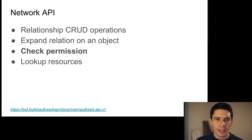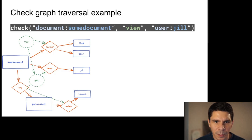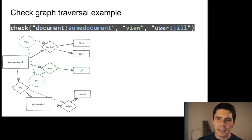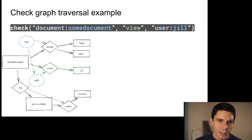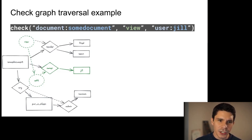Here's a quick example of how we traverse the graph. We're checking if user Jill has the view permission on a document. We start at 'view' and walk downstream. First we check 'reader' — Jill is not a reader. Then we walk down to 'edit' and from edit we go to 'owner' — we find that Jill is an owner. At that point we can already determine she has view on this document. We also check the admin path to see if Jill is an admin on the document's organization.